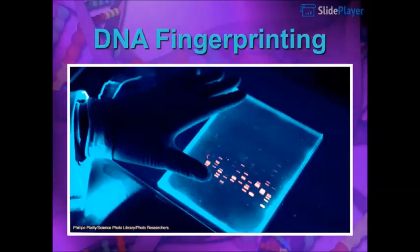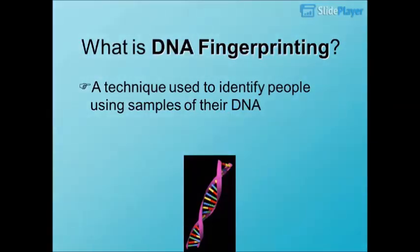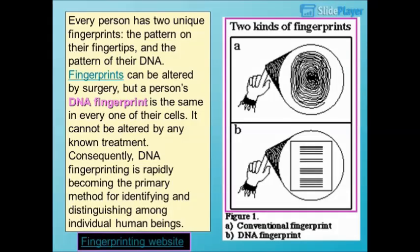DNA Fingerprinting: A technique used to identify people using samples of their DNA. Every person has two unique fingerprints — the pattern on their fingertips and the pattern of their DNA. Fingerprints can be altered by surgery, but a person's DNA fingerprint is the same in every one of their cells. It cannot be altered by any known treatment.